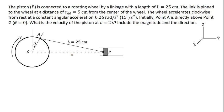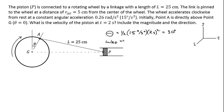Let's figure out what's going on at two seconds — let's find the positions and the value of theta. With constant acceleration, theta equals one half times the acceleration, which is 15 degrees per second squared, times two seconds squared. So after two seconds, theta equals 30 degrees. And omega AG — the wheel's rotational speed — is 15 degrees per second squared times two seconds, equal to 30 degrees per second, or 0.52 radians per second.